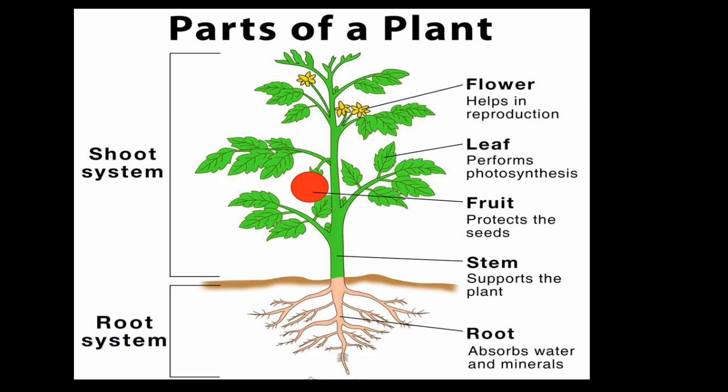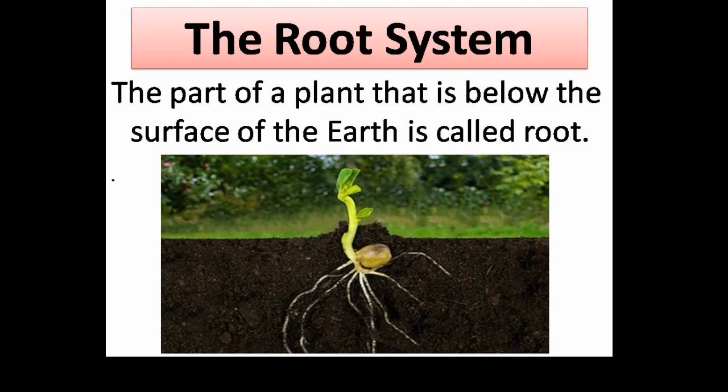The root system absorbs water and minerals. Under the shoot system we have the stem that supports the plant, fruit that protects the seed, leaf that performs photosynthesis, and flower that helps in reproduction.